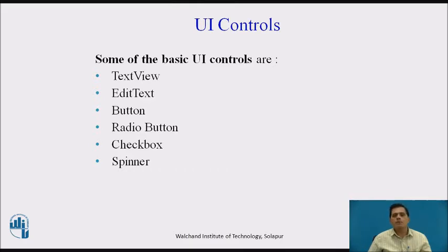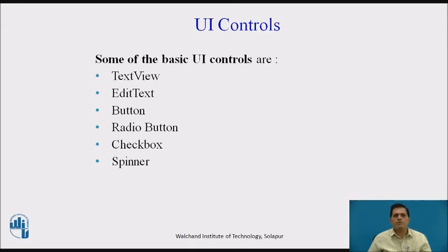A view has a location expressed as a pair of left and top coordinates, and two dimensions expressed as width and height. The unit for location and dimensions is the density-independent pixel, referred to as DP.